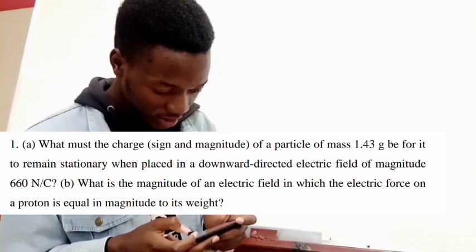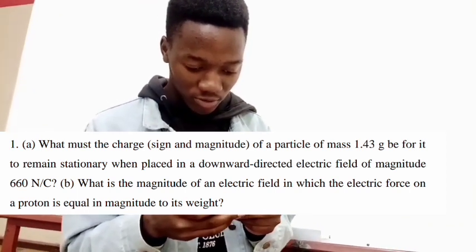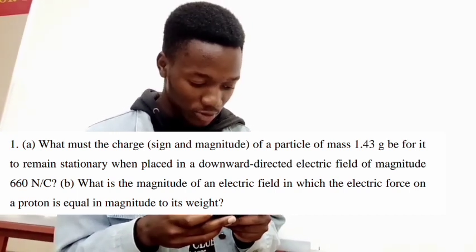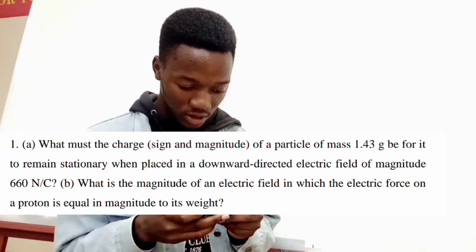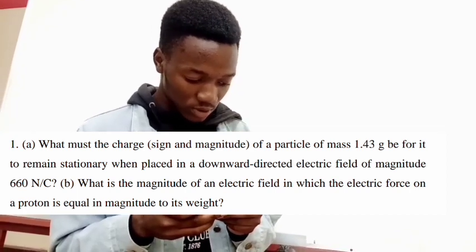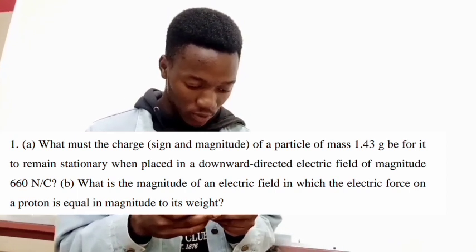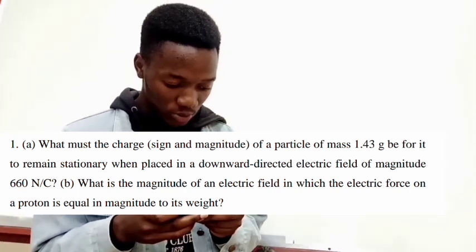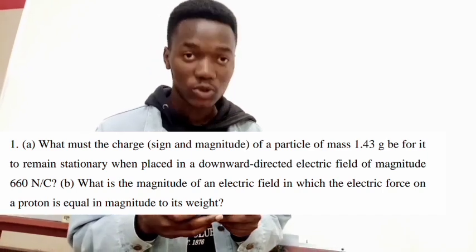Question 1A: What must the charge, sign and magnitude, of a particle of mass 1.43 grams be for it to remain stationary when placed in a downward direction electric field of magnitude 660 newtons per coulomb? Question 1B: What is the magnitude of an electric field in which the electric force on the proton is equal in magnitude to its weight?